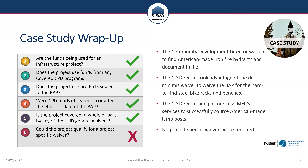To wrap up the case study: the City of Springfield successfully applied the six-step approach to their streetscape project. After going through steps one through four, they determined the project is subject to BABA only for iron and steel products. They found American-made fire hydrants, took advantage of the de minimis waiver for the bike racks and benches, and successfully used MEP to source domestically made light posts. Accordingly, they did not need to apply for any project-specific waivers.